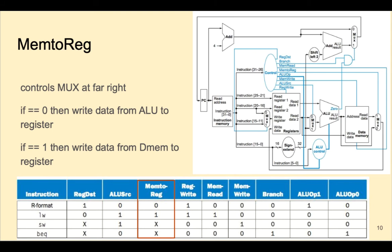For store word and branch equal, we have don't cares, because these instructions don't have permission to write back to the register file anyway, as you can see in the RegWrite signal.